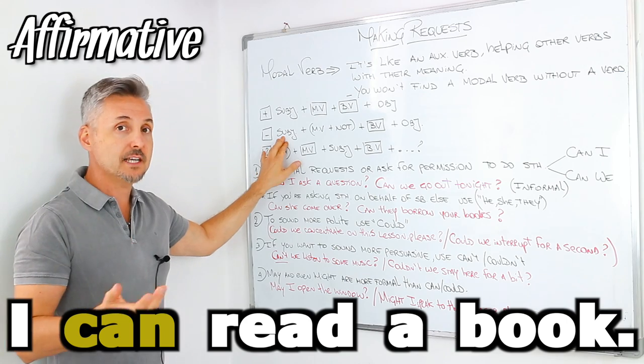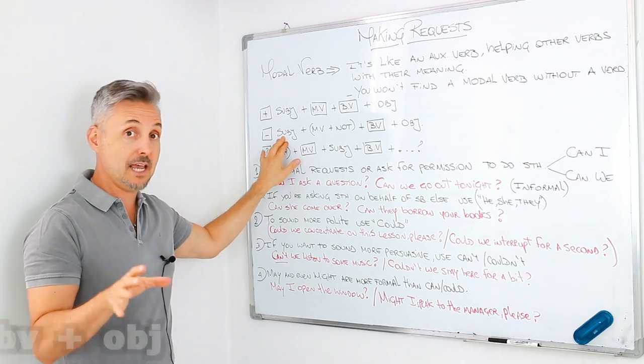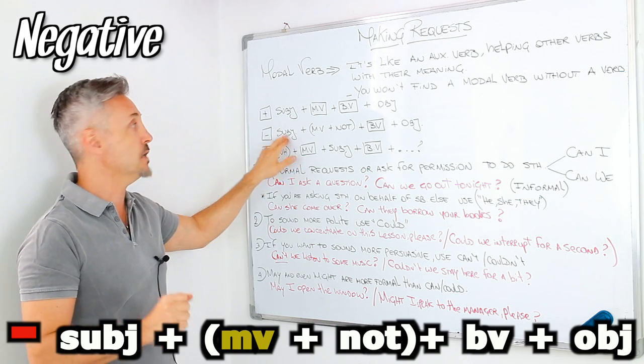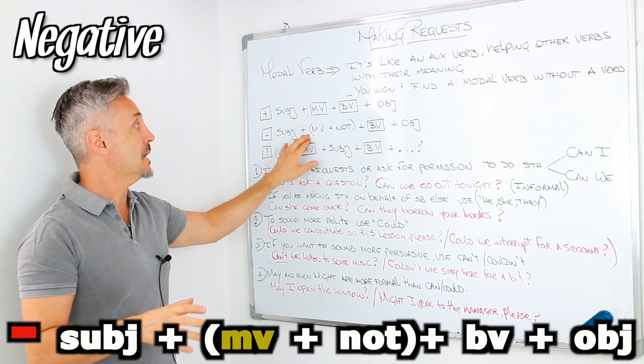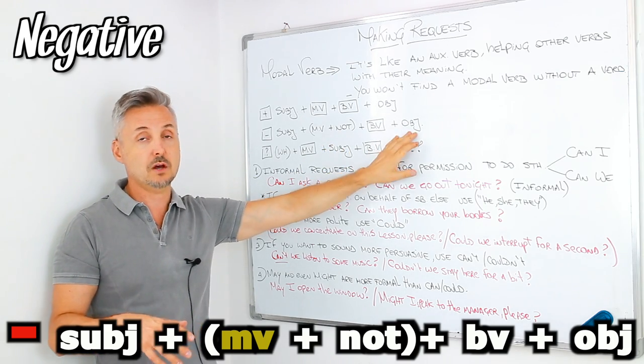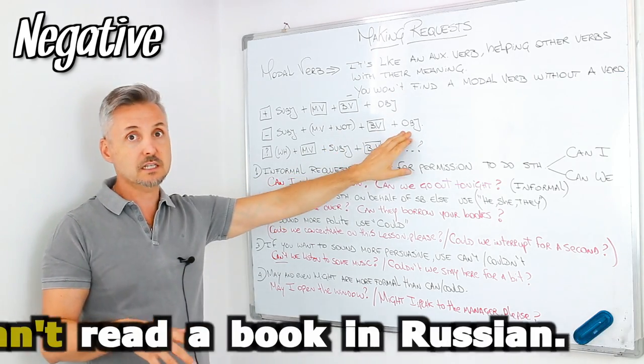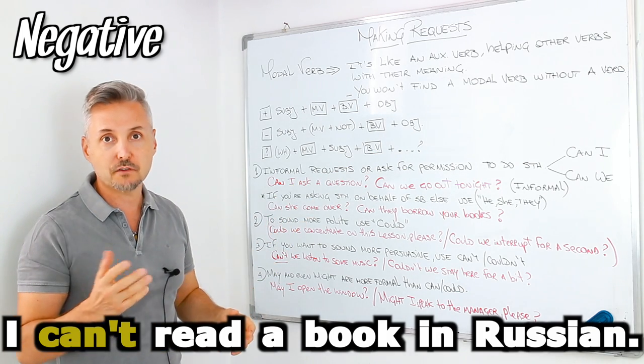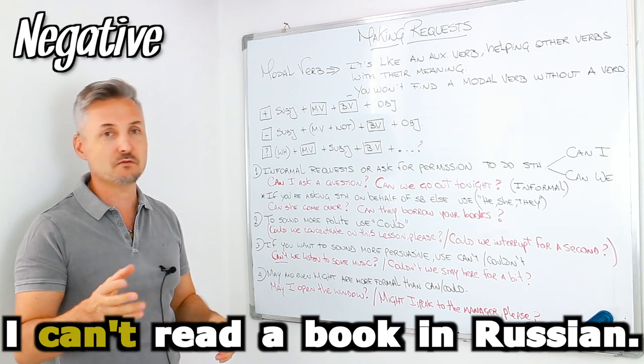For a negative sentence, we need the subject plus the modal verb plus not plus the base of the verb plus the object. For example, I can't read a book in Russian.